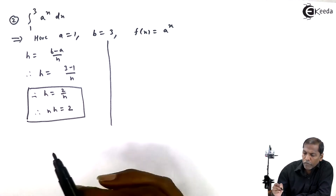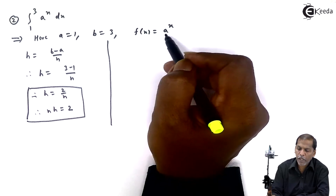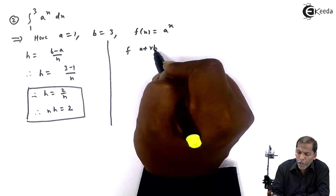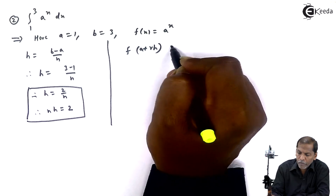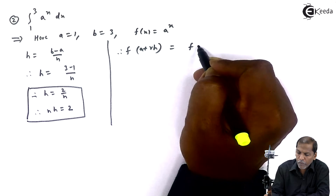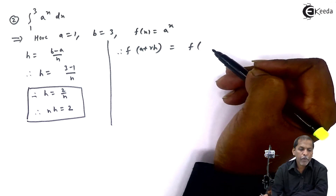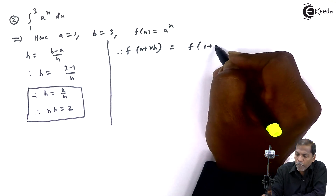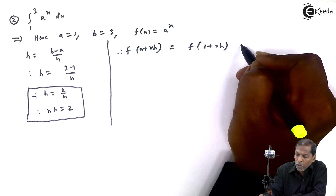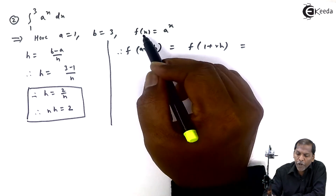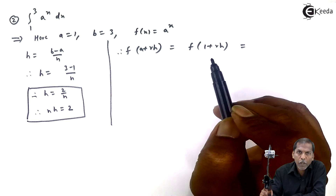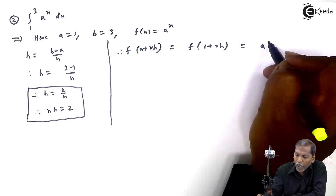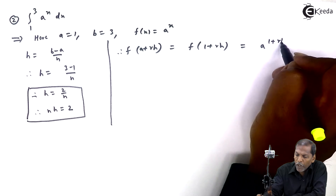f(x) equals aˣ. So we require f(a + rh). The value of a here is 1, so we replace a with 1, giving f(1 + rh). Since f(x) = aˣ, on the same line f(1 + rh) should equal a raised to (1 + rh).